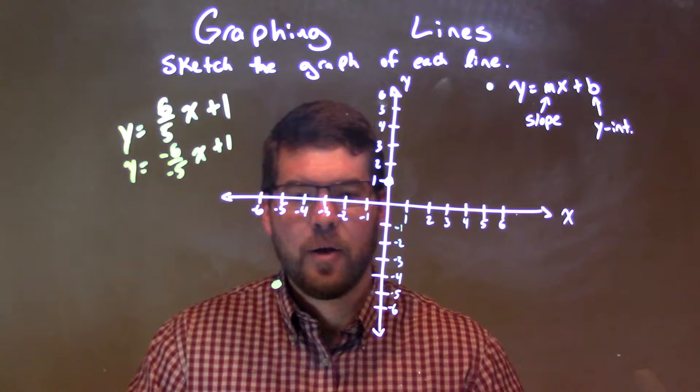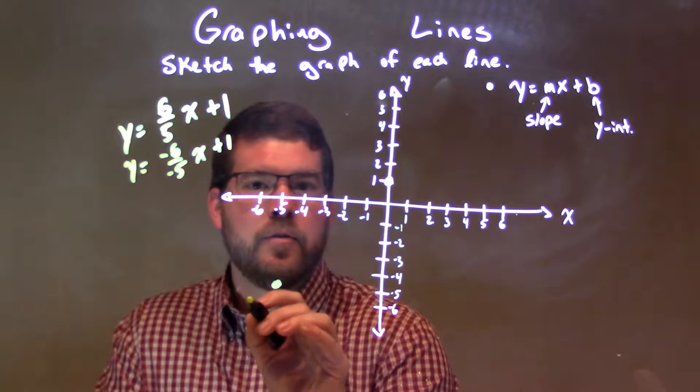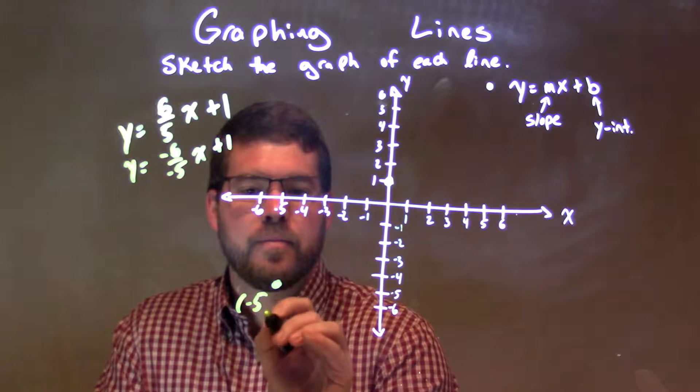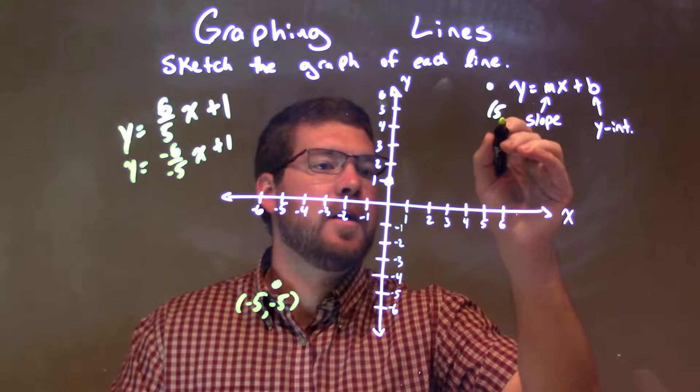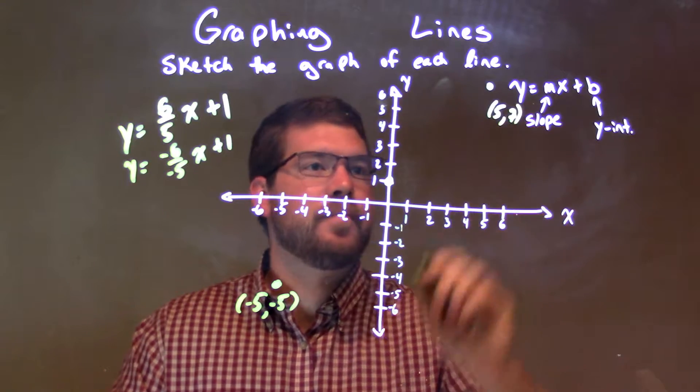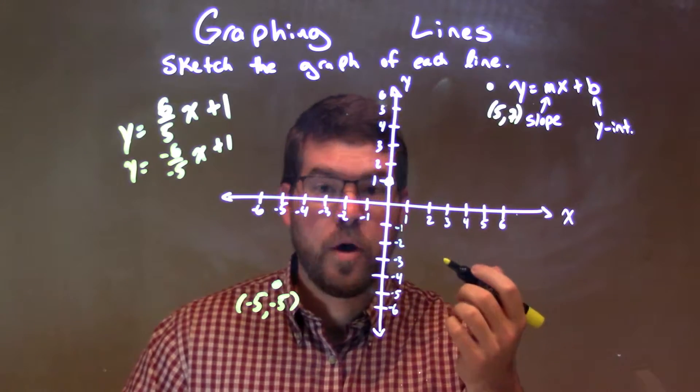So that helps. This point is negative 5, negative 5, and this point here is 5 positive 7, and we have our point 0 comma 1.